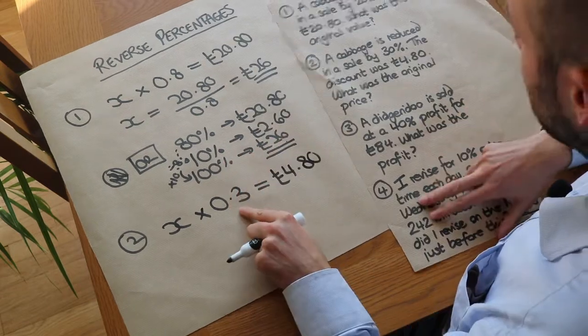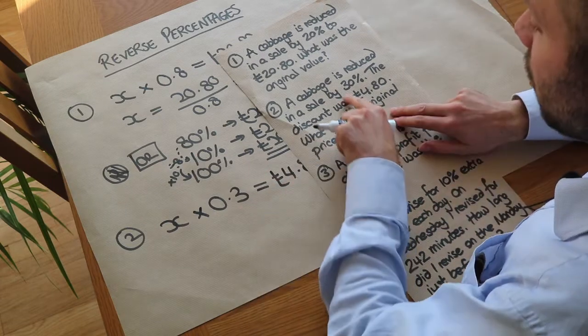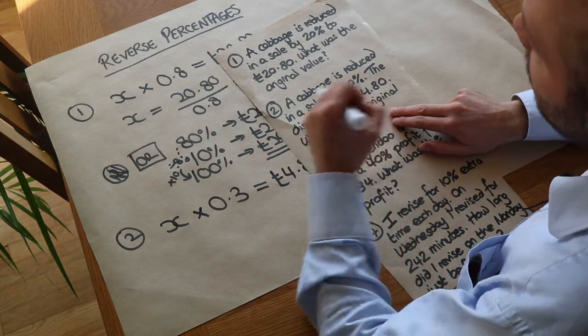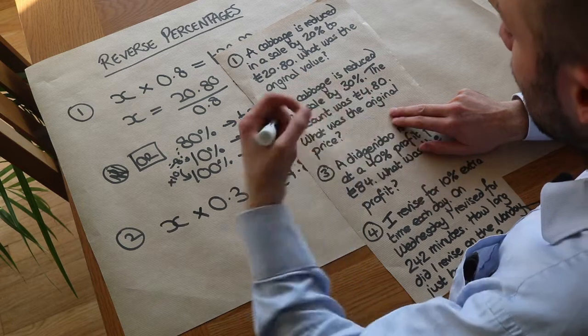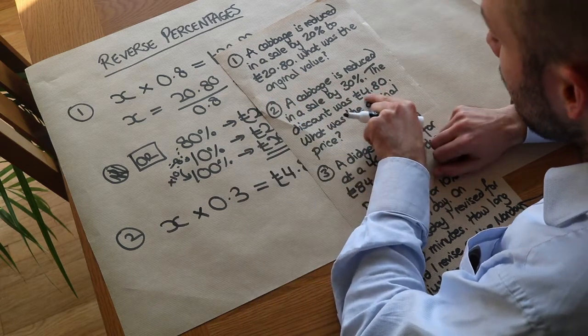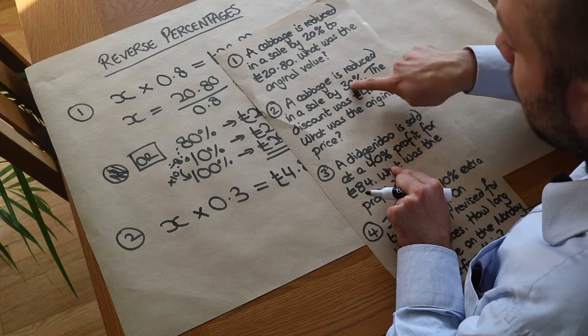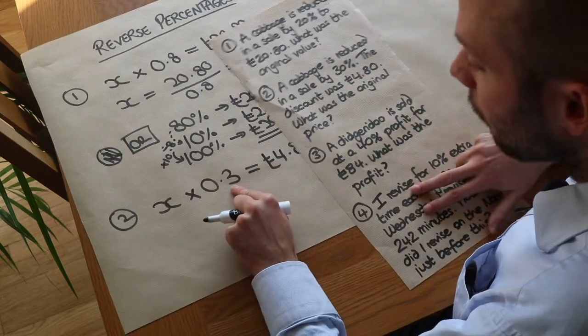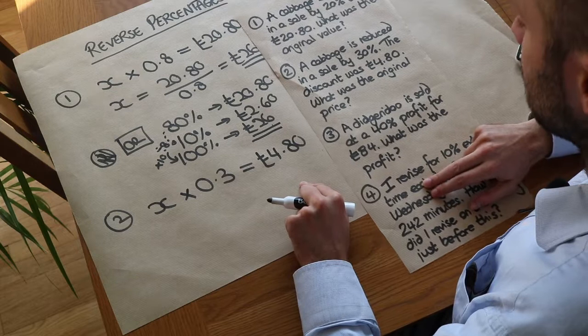So we're not timesing by 0.7 this time. I know when you reduce something by 30% you times by 0.7. But we'd do that if they told us the new value. They've actually told us the discount. The 30% is the discount so we're finding 30% of the value not 70%.